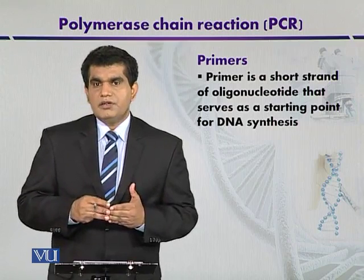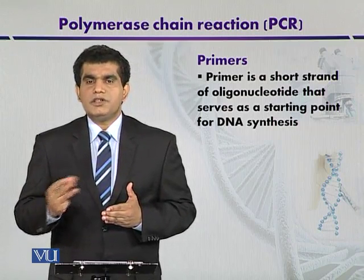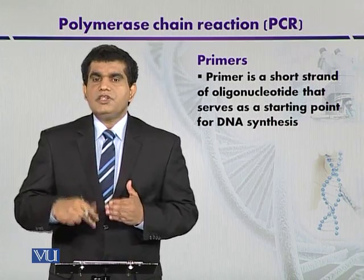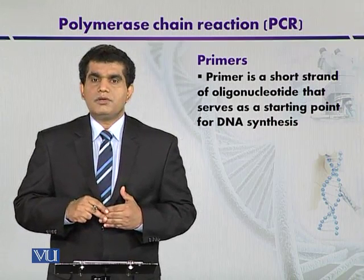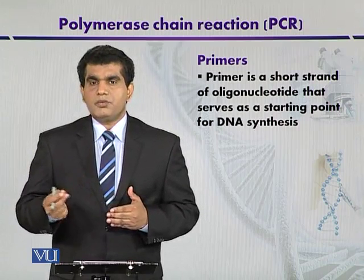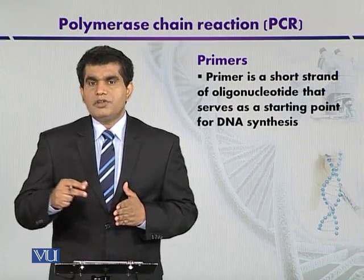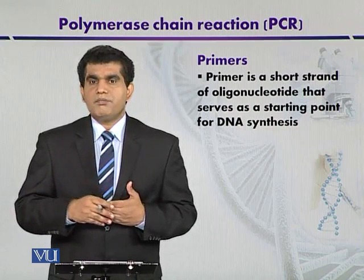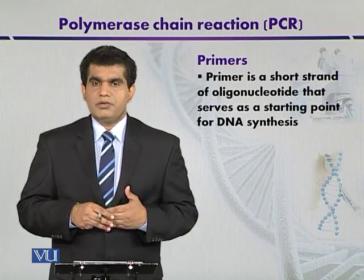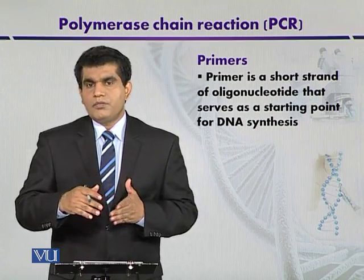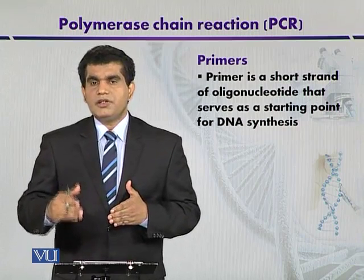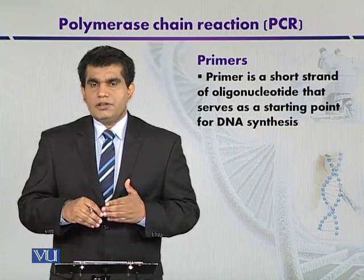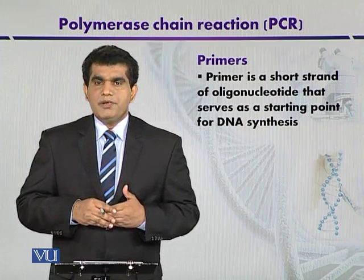The first feature is primer length, which should be between 17 to 30 base pairs. The next important feature is GC content, recommended to be around 50%. If GC content is lower than 50%, it can negatively affect the melting temperature of the primer. In such cases, we can slightly increase the length of the primer to help control its melting temperature.